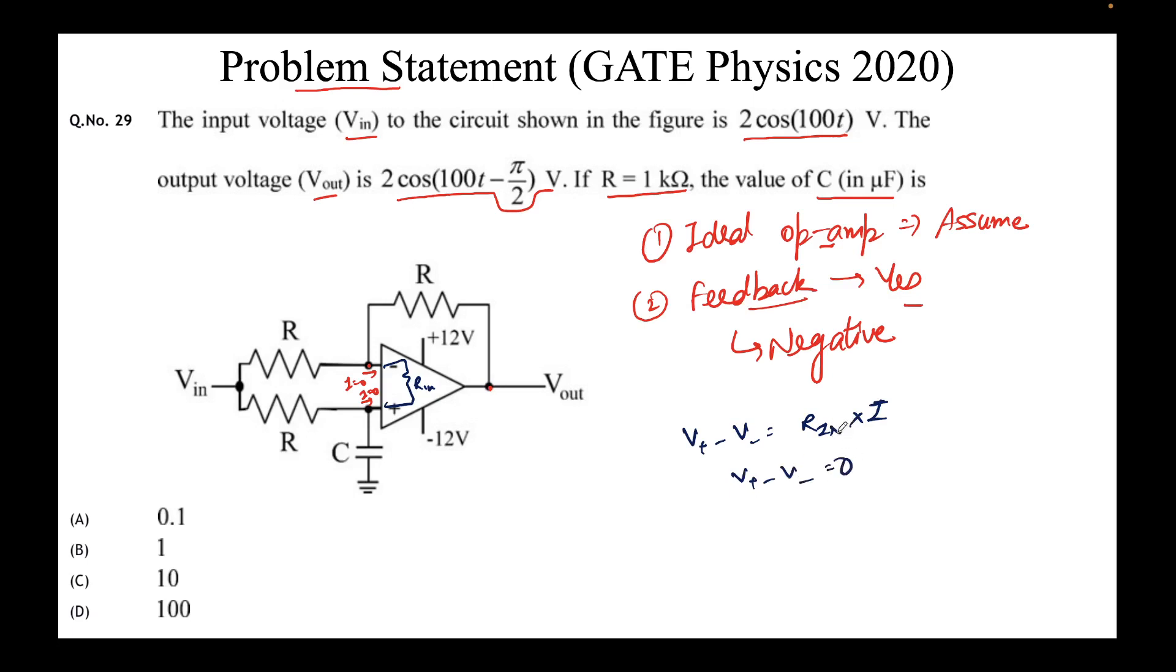Usually R_in is very high, like some megaohms or something. So we can say V_plus equal to V_minus. Now this condition is called virtual short. Why short? Because V_plus and V_minus, the two input terminals, have the same potential, hence short.